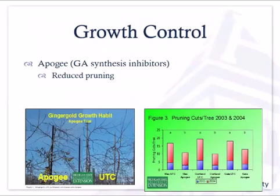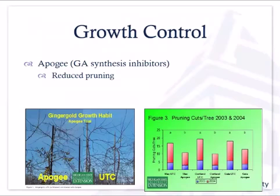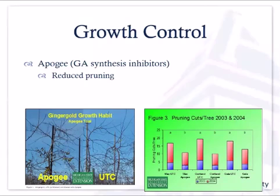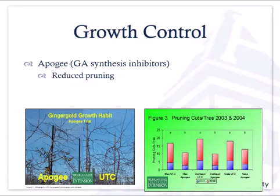For vegetative growth control, Apogee is the gibberellin inhibitor, and gibberellin is involved in shoot elongation. If we suppress gibberellin in the plant, we get reduced shoot growth. Looking at the picture, you've got an Apogee-treated tree on the left and the untreated control on the right — shoots are much longer in the untreated control. By putting Apogee on as a growth suppressant, you get more spurs instead of big, long shoots.